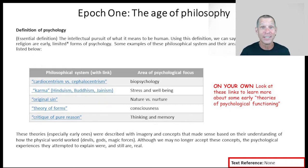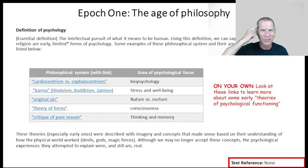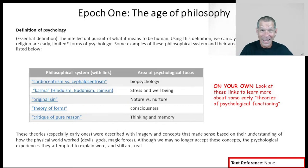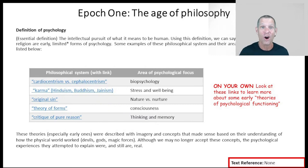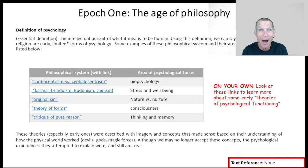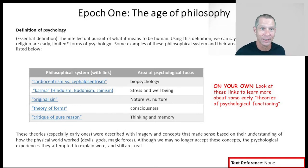A thousand years later, the Greeks figured out that it wasn't the heart that controls human beings — it's actually the brain. They championed this theory called cephalocentrism, which was the idea that the brain controls the body and not the heart. This is the foundation of what we would now call in modern psychology biopsychology.